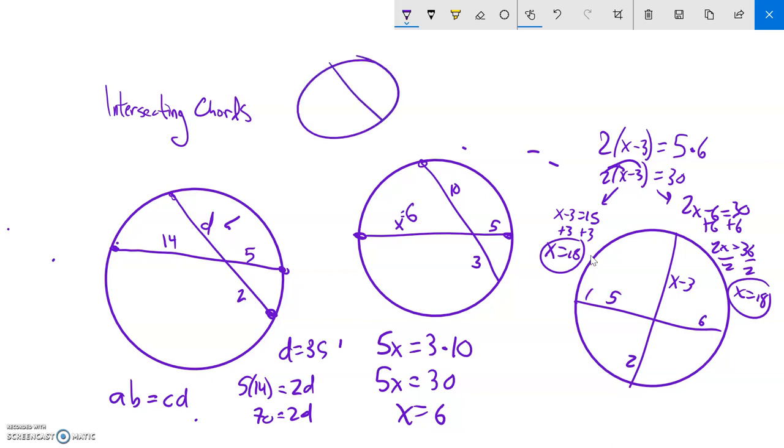So again, the big relationship here is if I have a circle, intersecting chords, that's A, that's B, that's C, that's D. A times B is equal to C times D, and the rest of it's algebra.